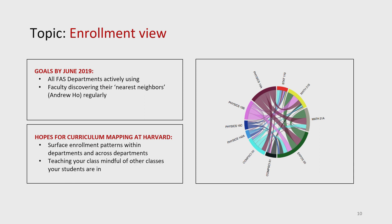The hope from the particular point of view of this project for curriculum mapping at Harvard broadly is to surface enrollment patterns within departments and across departments, teaching your class mindful of other classes that your students are in. And there's a pretty picture here, but Dustin's going to talk about that now.